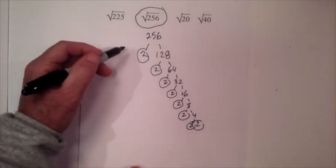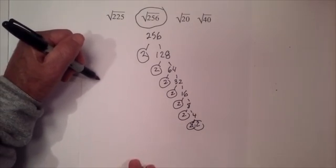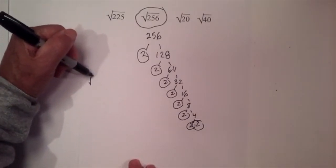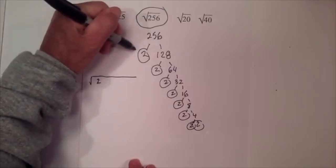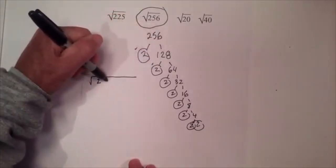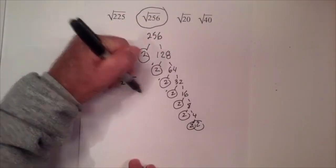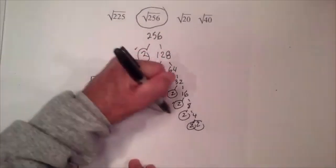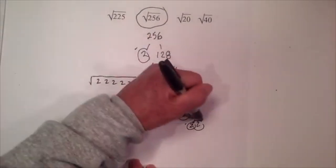Okay, so now I'm going to rewrite the square root of 256, and I'm sorry it's getting a little messy, but I'll write it. I'm going to put a check by each of the 2's, so we have this 2 and another 2 and another 2 and another one there, there, there, and there.